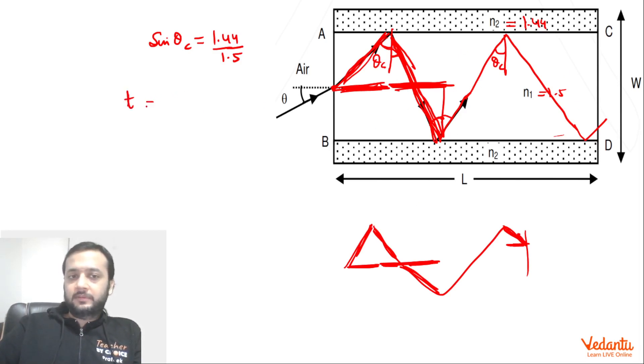So now time can be written as total distance traveled, that is L upon sin theta c divided by the speed of light. Speed of light inside this structure would have reduced by a factor of mu, so this will become c upon mu. n1 is 1.5.